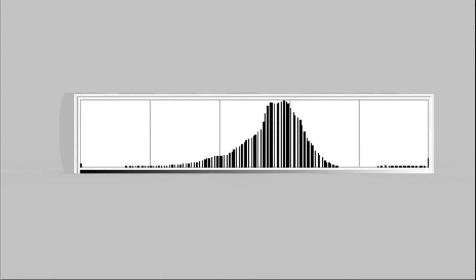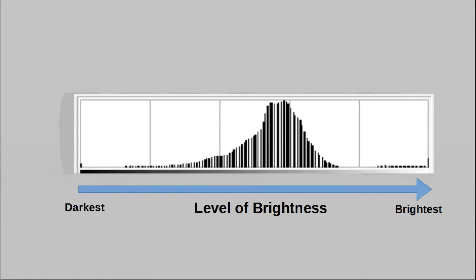The histogram actually represents a count of the number of pixels at a particular brightness. The horizontal axis represents the brightness, and the vertical axis represents the number of pixels that actually have that particular brightness.